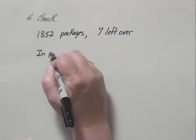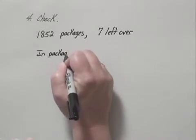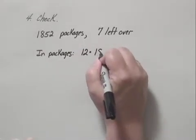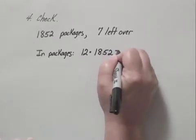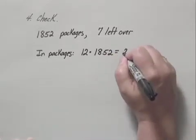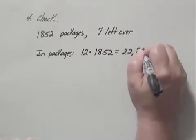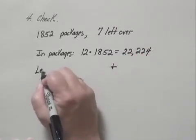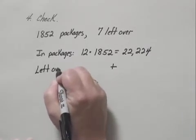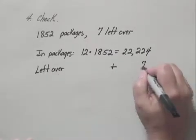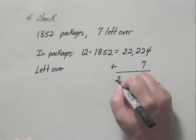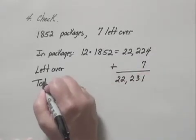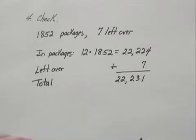Well, in the packages how many cakes would there be? In the packages we would have 12 times 1852 which is 22,224. And if we add the number left over, which would be 7, we should have the total. 22,231 was the total number of cakes and that does check with the total we were given in the problem.